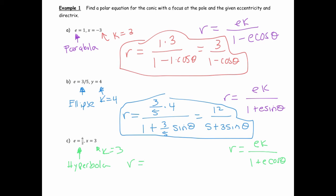It's going to be r equal to e, which is 6/5, times k, which is 3, divided by 1 plus e, which is 6/5, cosine theta. As we did before, I'm going to multiply through by 5 to turn this into 18 over 5 plus 6 cosine theta. That's the equation of our hyperbola.